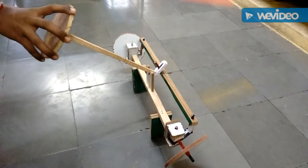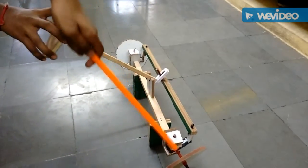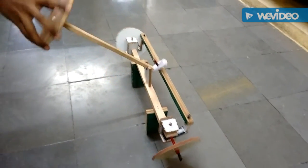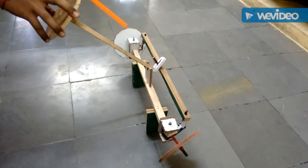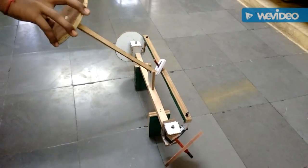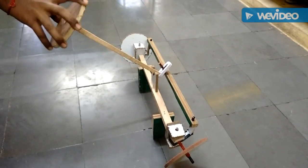So due to this, the stub axle which is connected to the kingpin post rotates. Due to which our wheel also rotates. This is the main concept behind the go-kart steering mechanism. Thank you.